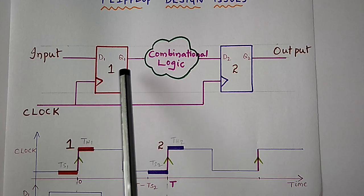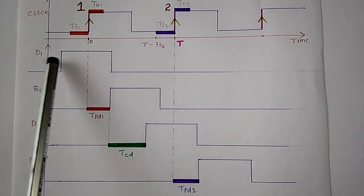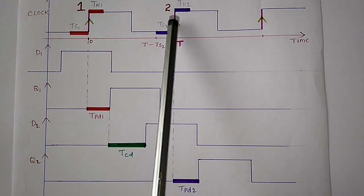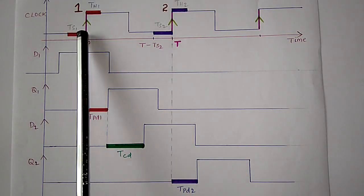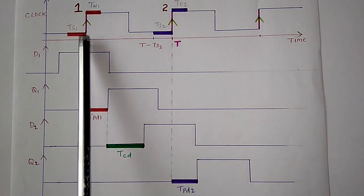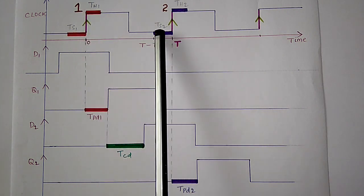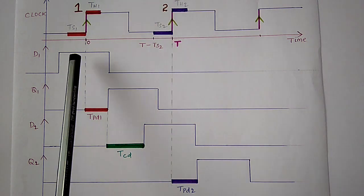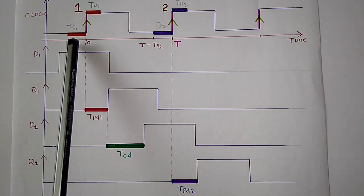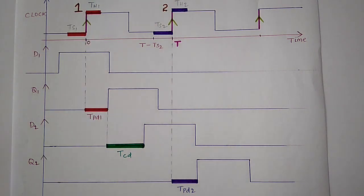So one has to consider TS1 and TH1 at first rising clock edge and TS2 and TH2 at second rising clock edge. Since the input signal is constant during TS1 and TH1 there is no setup and hold time violations for flip-flop one.